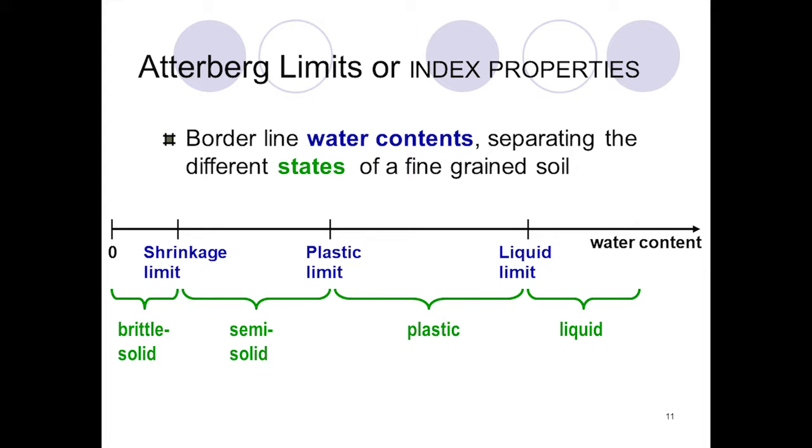Atterberg limits are index properties giving the relationship between grain size and water content. They define borderline water contents separating different states of fine-grained soil. Above liquid limit, soil behaves as liquid. Between plastic limit and liquid limit, soil is plastic. Between plastic limit and shrinkage limit, soil behaves as semi-solid, and below shrinkage limit as brittle solid.